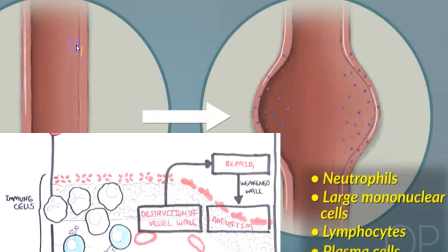In a normal artery, inflammation can end up with what we call an aneurysm. Because of inflammation, neutrophils, mononuclear cells, lymphocytes, plasma cells — all these different types of immune-mediated cells — infiltrate into the vascular wall, producing vasculitis. Later, destruction of the vascular wall ends up with aneurysm formation.